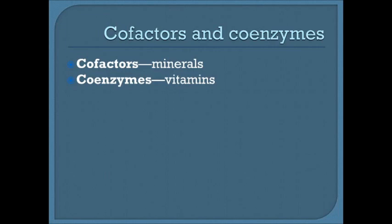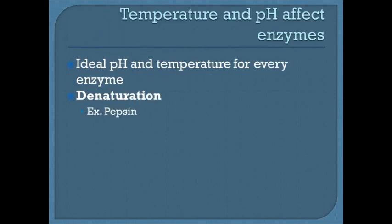Cofactors bind to enzymes before substrates can bind — they're like little helpers, typically microminerals ingested through our diets. Without cofactors, enzymes tend to be intact but not functional. Coenzymes function as cofactors but are vitamins — equally important. Each enzyme has its own ideal pH and temperature; if anything goes beyond that, it can result in denaturation — the enzyme losing its function.